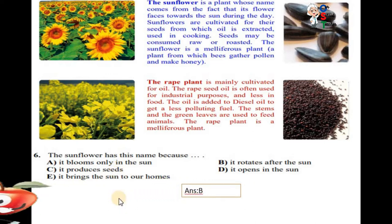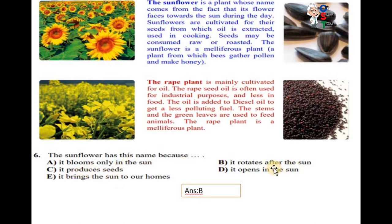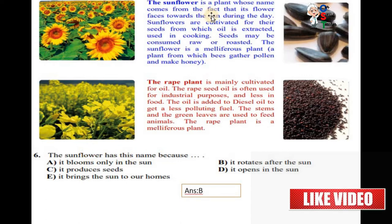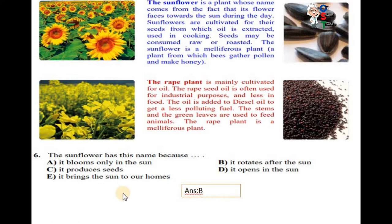Now question number 6. The sunflower has this name because it blooms only in the sun, it rotates after the sun, it produces seeds, it opens in the sun, it brings the sun to our homes. Sunflower has this name. You can see in the para, comes from the fact that its flower faces toward the sun. So it rotates after the sun. B is correct.